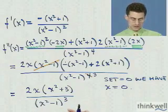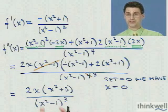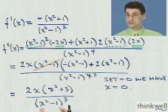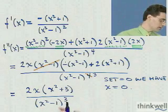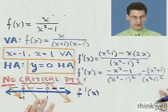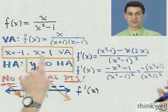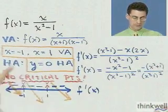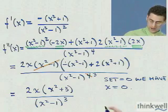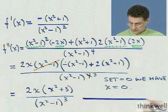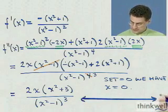The other place we have to look is where the second derivative is undefined. Second derivative is undefined where the bottom is 0, and so we see that could happen at either plus or minus 1, possibly a place of contention. But remember, we've already seen that those represent vertical asymptotes, so we don't need to worry about them as points of inflection. OK, well now let's make a little number sign chart here for the second derivative.